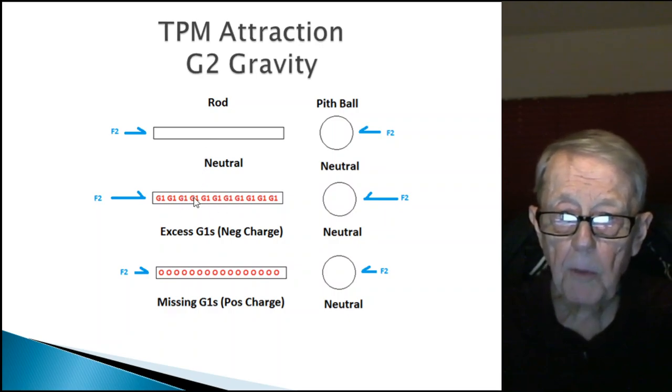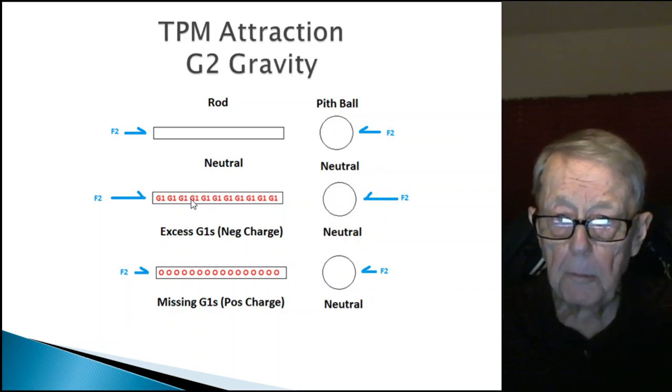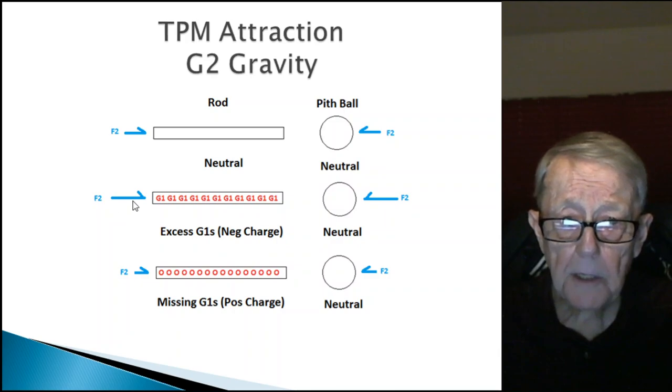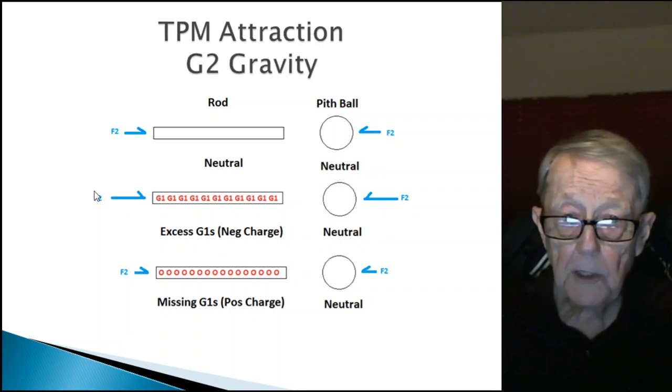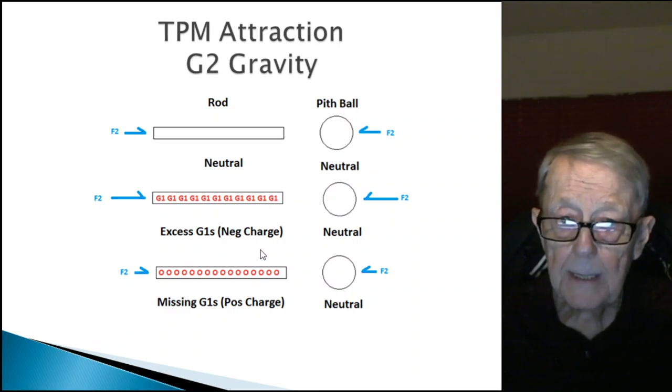Now this is a plastic rod and you rub it with fur and you pick up, normally they say you pick up electrons from the fur and it charges this rod negatively. In the particle model, you pick up G1s. Now you have extra G1 particles here. What happens is this force, the length of the line, this G2 force is stronger. The reason it's stronger is because the G2 particles lose more as they go through. When there's more G1 particles, G2 particles hit and scatter, leaving fewer here causing a stronger force on the pith ball that way. So now you have a much stronger force and G2 gravity causes the attraction.